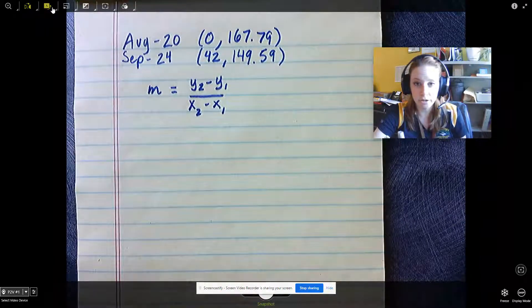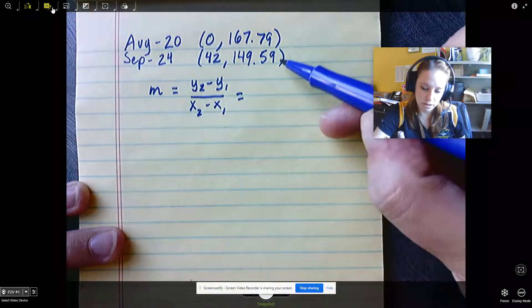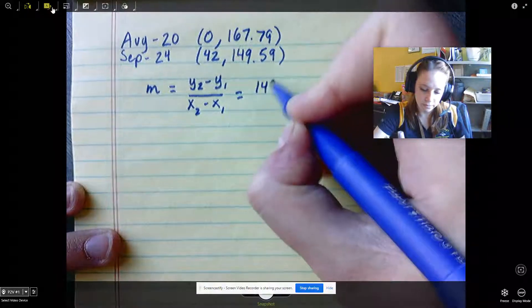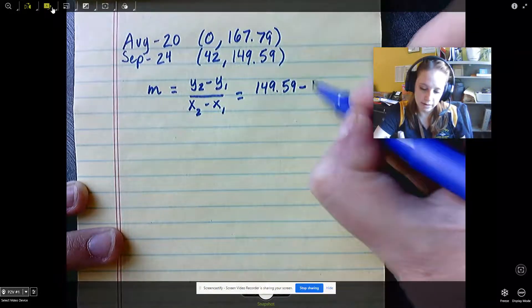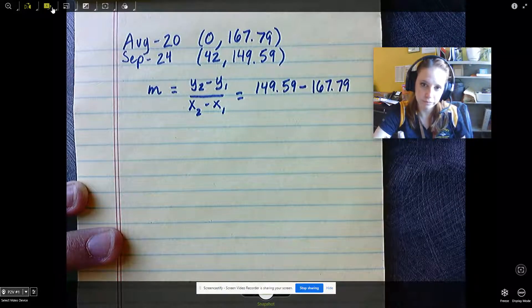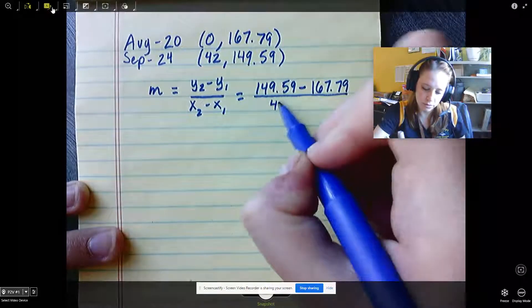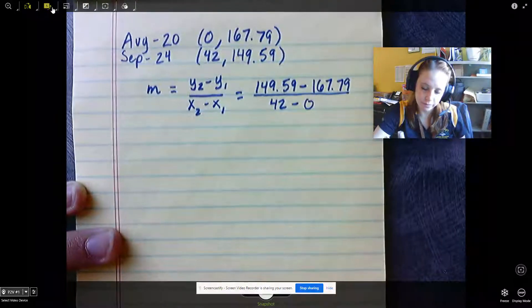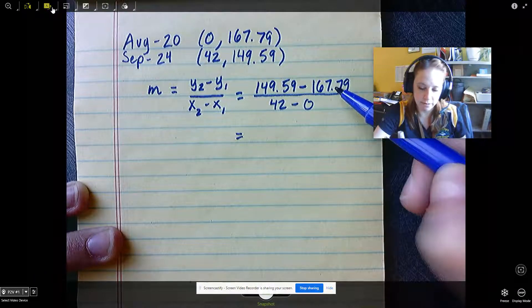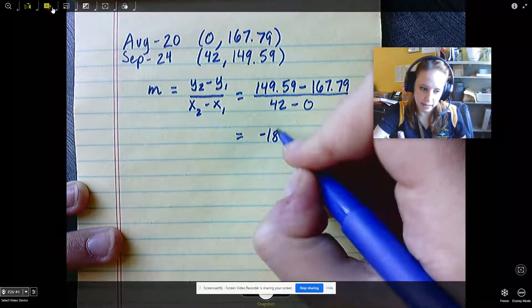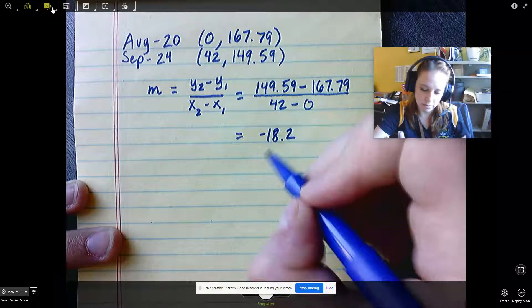So y2 is going to be our 149.59 minus our y1, which would be 167.79, divided by x2, which is 42, minus 0. Then we're going to do 149.59 minus 167.79, we get negative 18.2, and 42 minus 0 is 42.